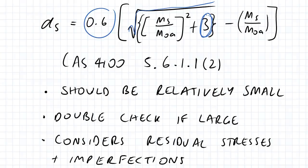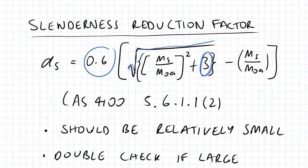One of the things you want to understand with alpha s is that it considers the residual stresses and imperfections, and that's how it's reducing that phi Msx value.